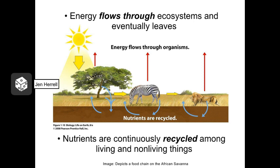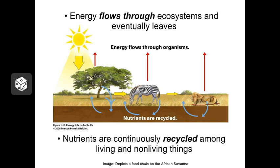Nutrients and energy behave differently inside food chains. Nutrients tend to be recycled as they pass from one organism to another. Plants take in nutrients from the soil and the air to build their bodies. When herbivores such as zebras eat the grass, they take in some of those nutrients to build their bodies. When predators such as lions eat the zebra, the same thing happens. When these organisms die, the nutrients aren't lost — fungi and bacteria break down the body and take the nutrients back to use in building their own bodies. So nutrients are constantly being recycled within an ecosystem and typically don't leave unless an organism leaves the ecosystem.